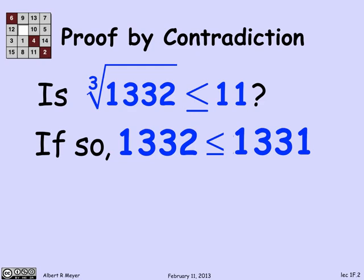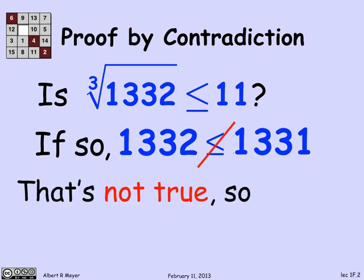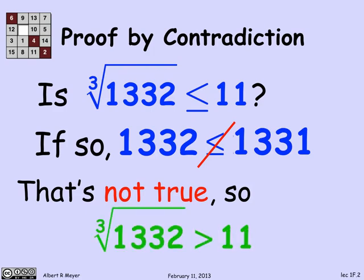Wait a minute. I've just concluded that 1,332 is less than 1,331. That's obviously not true, which means that my assumption that this inequality held doesn't make sense. It leads to this immediate contradiction, which means that, in fact, the inequality doesn't hold. And I have now precisely and unambiguously and I hope clearly proved that the cube root of 1,332 is greater than 11, even though we never actually computed the cube root of 1,332.